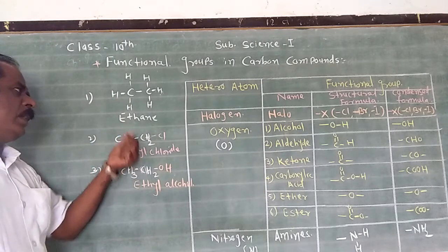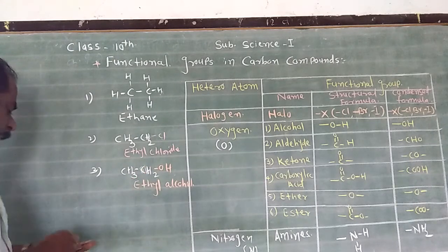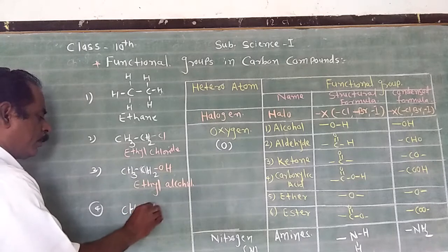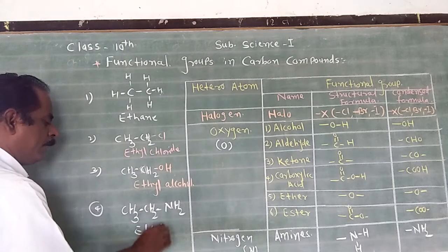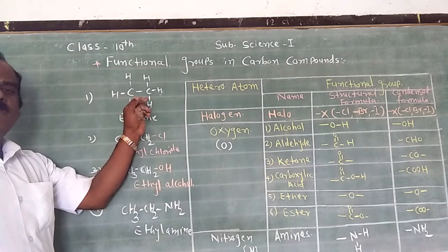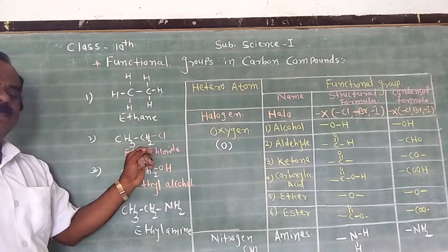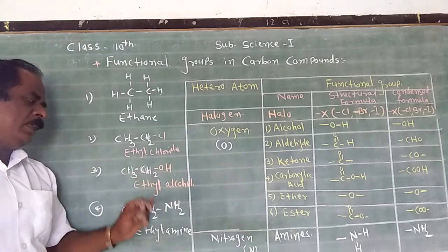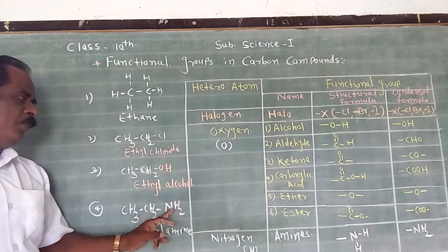Ethyl alcohol has different properties than ethyl chloride or ethane, and its reactivity is also different. Similarly, when hydrogen is replaced by a nitrogen-containing group, the compound ethyl amine is formed. So from these examples, ethane, ethyl chloride, ethyl alcohol, and ethyl amine all have different properties and reactivity. Why? Because they each have a different functional group.